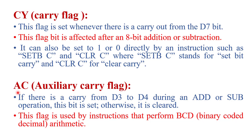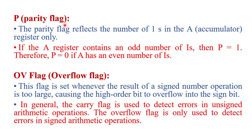The next conditional flag register bit is the Auxiliary Carry Flag. This flag is set whenever a carry is generated from D3 to D4 during an addition or subtraction operation; otherwise it is reset or cleared. This flag is used by instructions that perform BCD (Binary Coded Decimal) arithmetic operations.